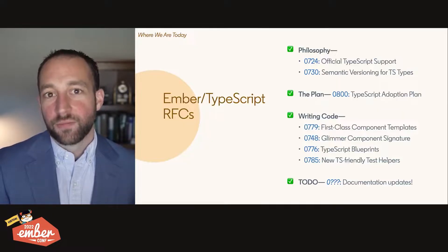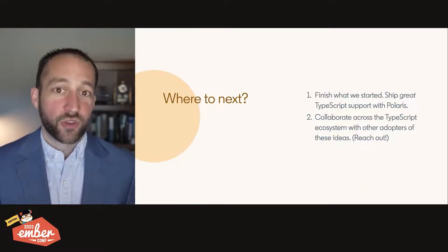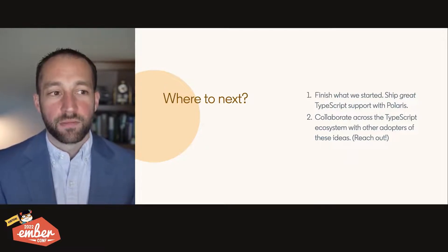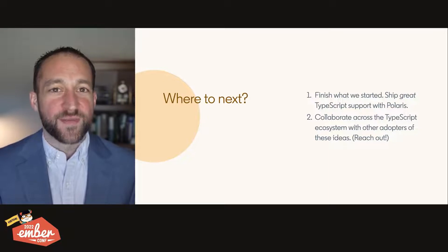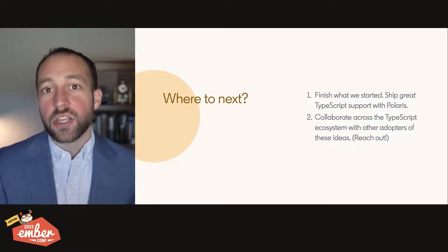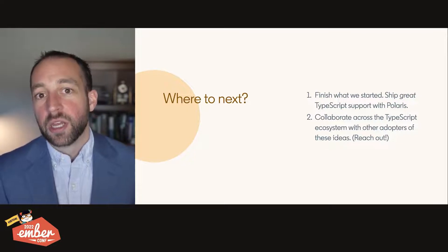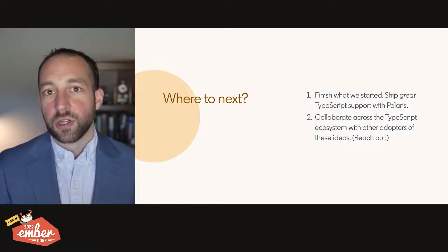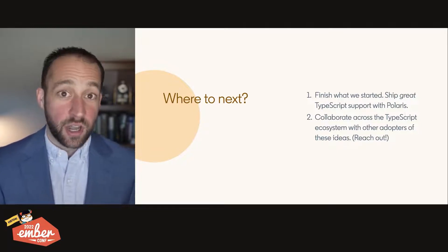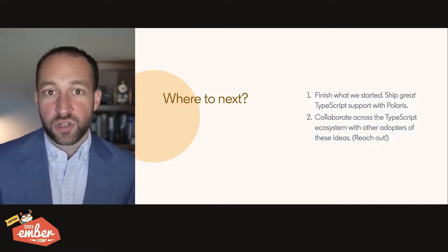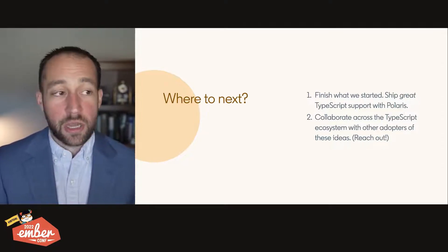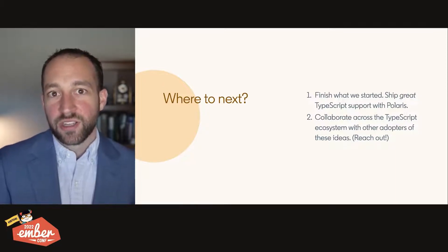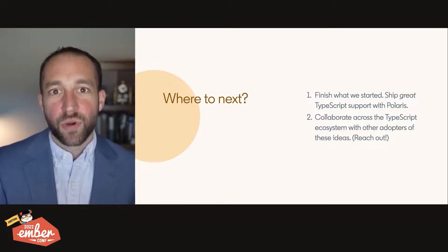That's where we are today. Where are we going in the future? Number one, we're going to finish what we started — we're going to ship great types with Polaris. Types have been good in Ember up to today, but we're going to make them great. Second, we want to continue collaborating with the rest of the TypeScript ecosystem. Many of the things we've done here are very intentionally not Ember-specific. We don't want to be siloed, and we think there are a lot of positive-sum outcomes to be had in collaboration between frameworks and library authors. So please kick the tires on these ideas, policies, and tools, and let us know what does and doesn't work. Collaborate with us — let's make progress together.